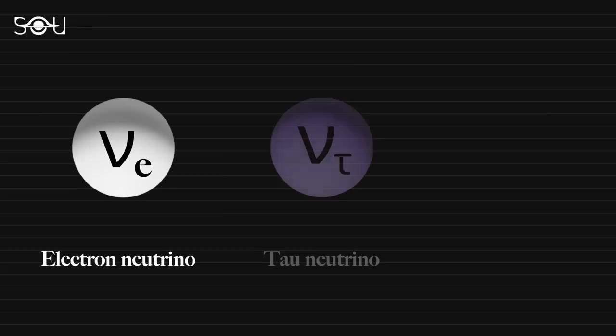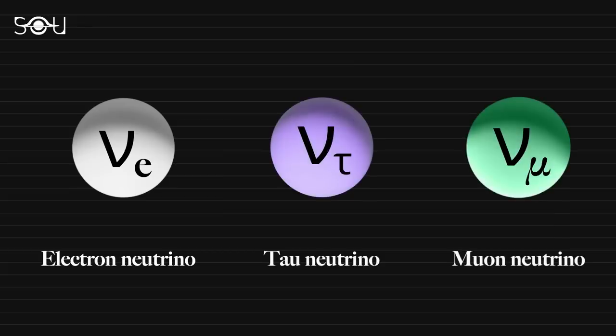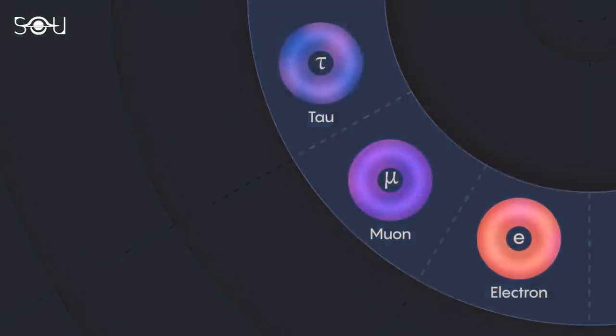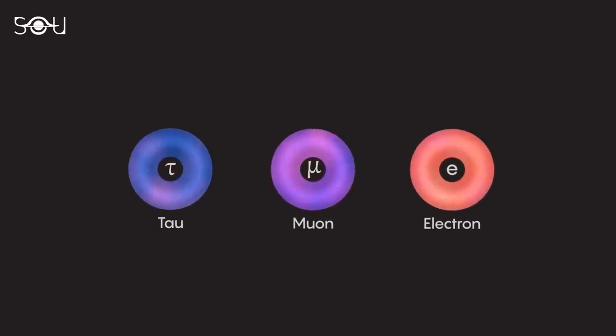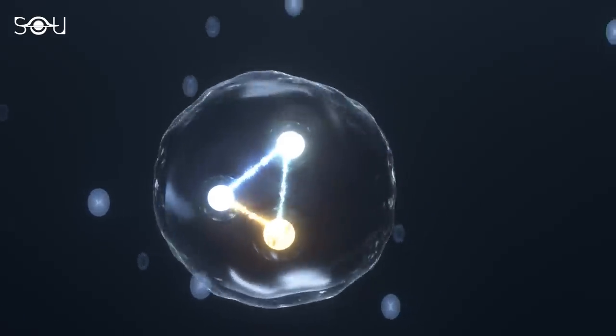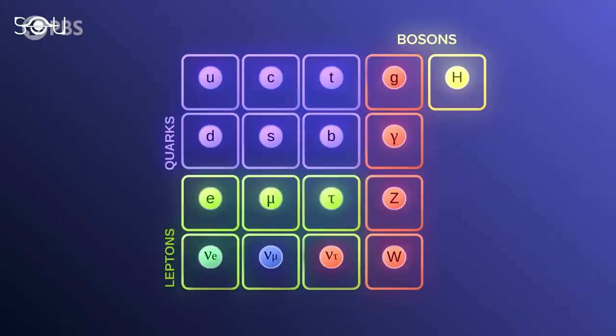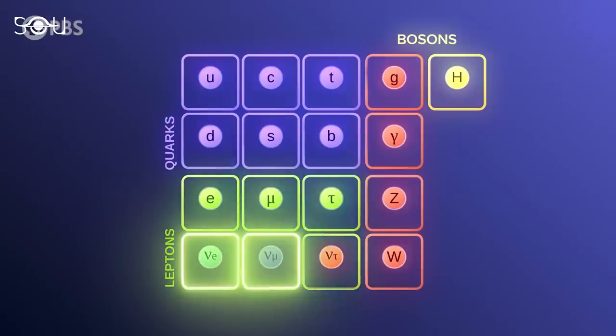Neutrinos come in three types: electron neutrino, tau neutrino, and muon neutrino, each linked to corresponding fundamental particles: the electron, muon, and tau. Although neutrinos do not serve as building blocks for other matter, they hold immense significance in the cosmic play.